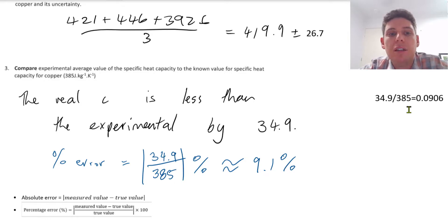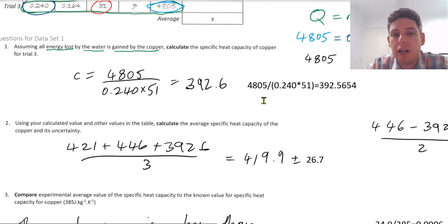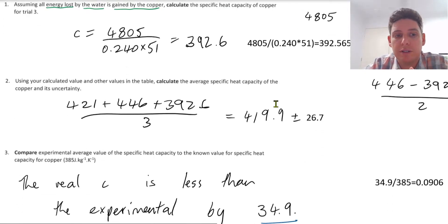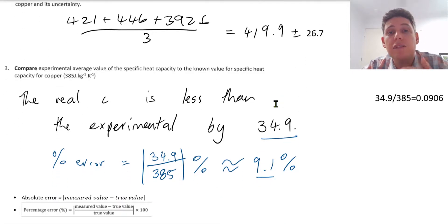So if you compare the two, we have an absolute error of 34.9 and a percentage error of 9.1. So all of these questions, I just have the numerical answer. It's really important that each answer you give, you give in a sentence and you put the correct units for each of these as well. So just keep that in mind. And don't forget to check out part two of this data test practice video.